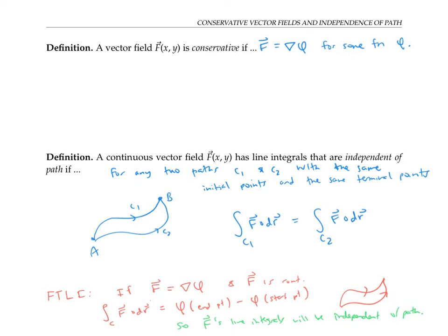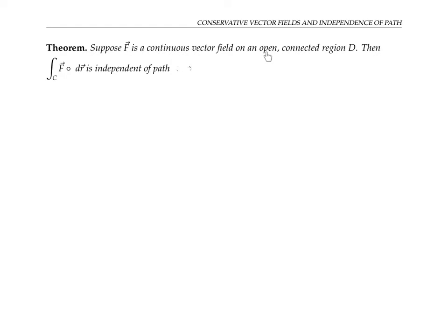In this video, I want to prove the converse: that if F has line integrals that are independent of path, then under suitable conditions, F will be conservative. So suppose that F is a continuous vector field on an open connected region D. Open means D doesn't contain any of its boundary points — for any point in D, there's a little disk around that point that also lies in D. Connected means D is one continuous piece, and in particular, for any two points in D, there is some path connecting them.